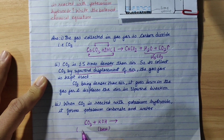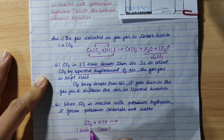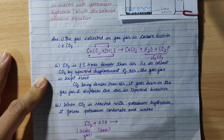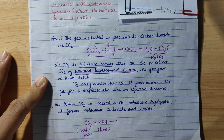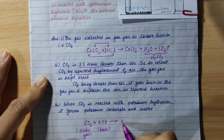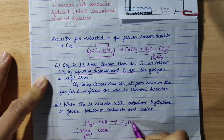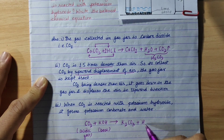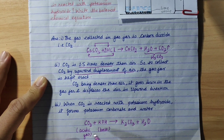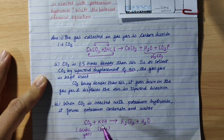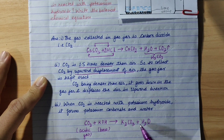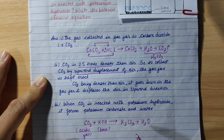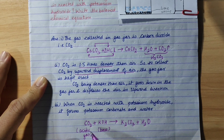Carbon dioxide is an acid gas. When a base and acid react, they produce salt and water. In this case, CO2 reacts with KOH to produce potassium carbonate (K2CO3) and water. This is an acid-base reaction producing salt and water.